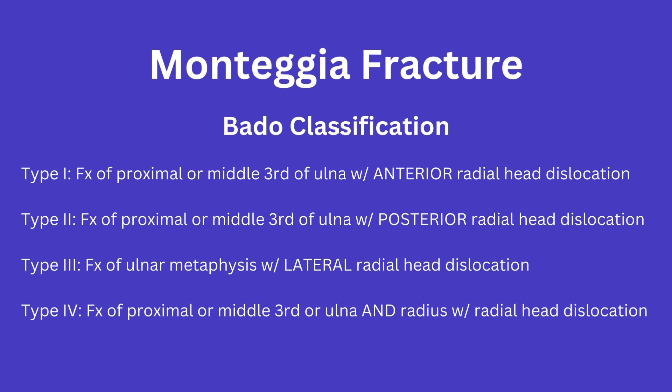Type 2 involves a fracture to the proximal or middle third of the ulna, just as in Type 1. However, the radial head is posteriorly dislocated instead of anteriorly dislocated. For Type 3, this one involves a fracture of the ulnar metaphysis with the radial head dislocated laterally.